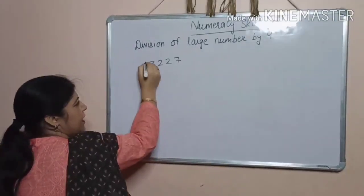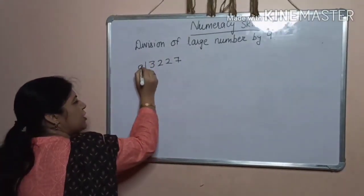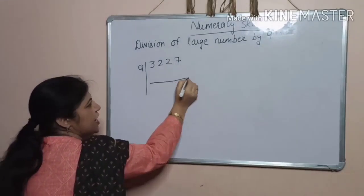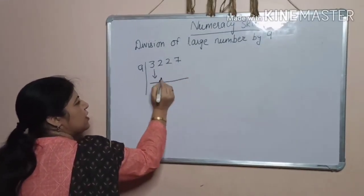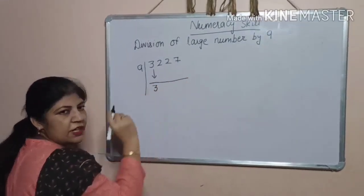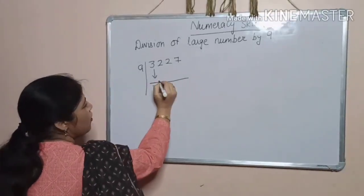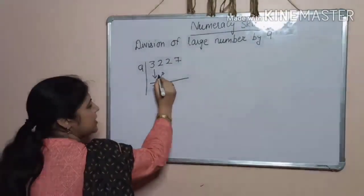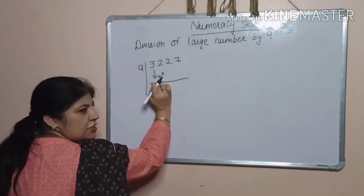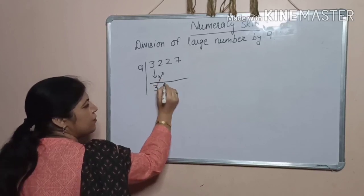3227 and divide it by 9. First step, yes, you know very well. Right, first digit as it is. Now, add next digit to this 3, you will get 5.